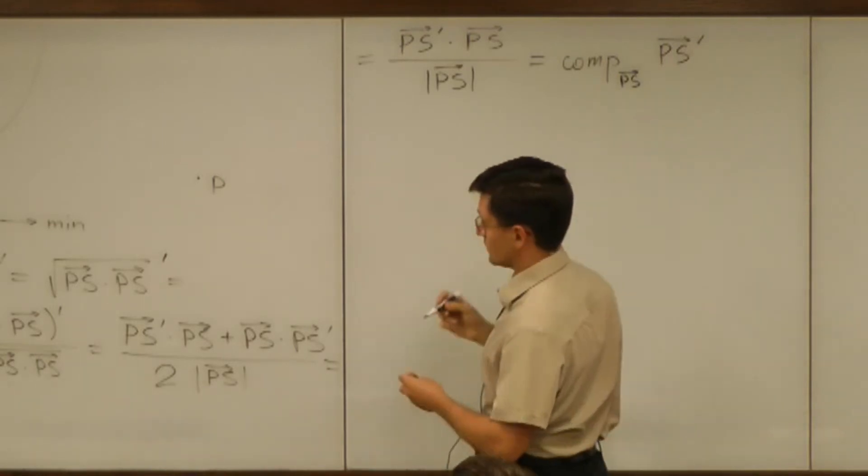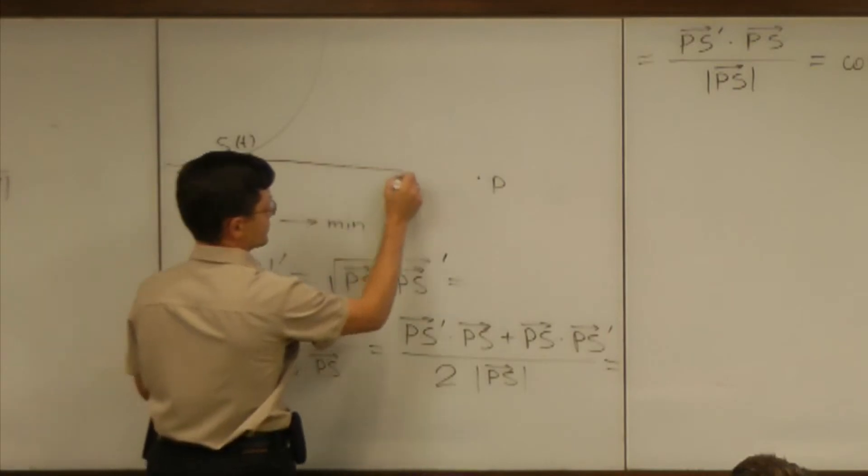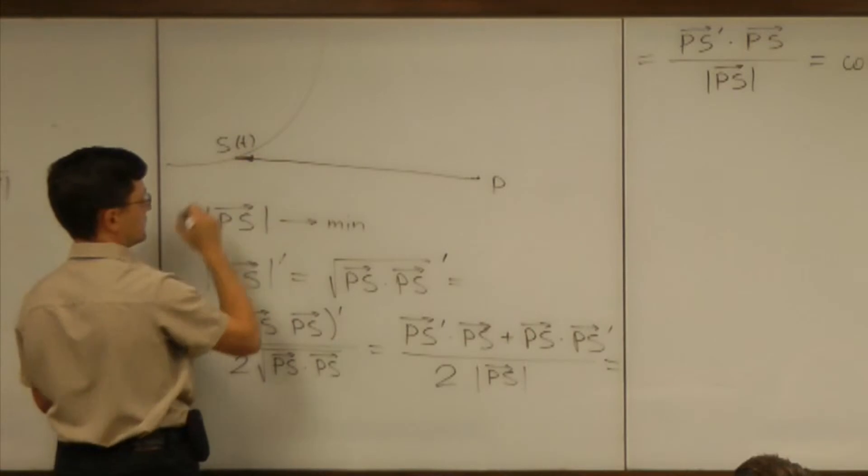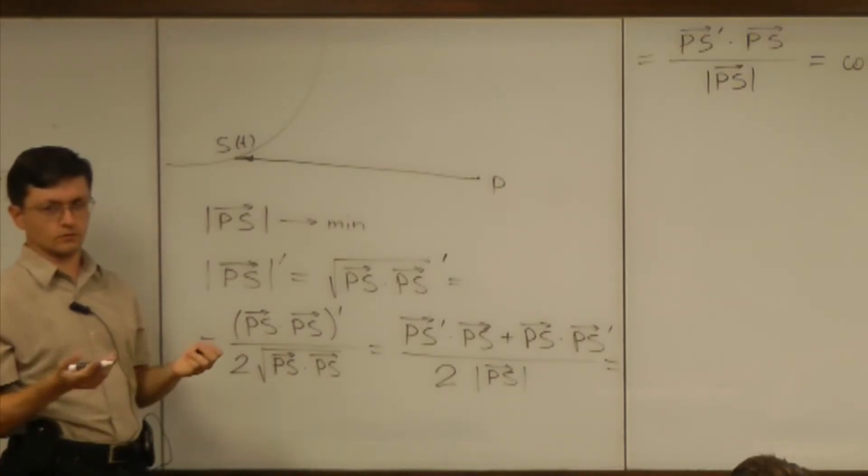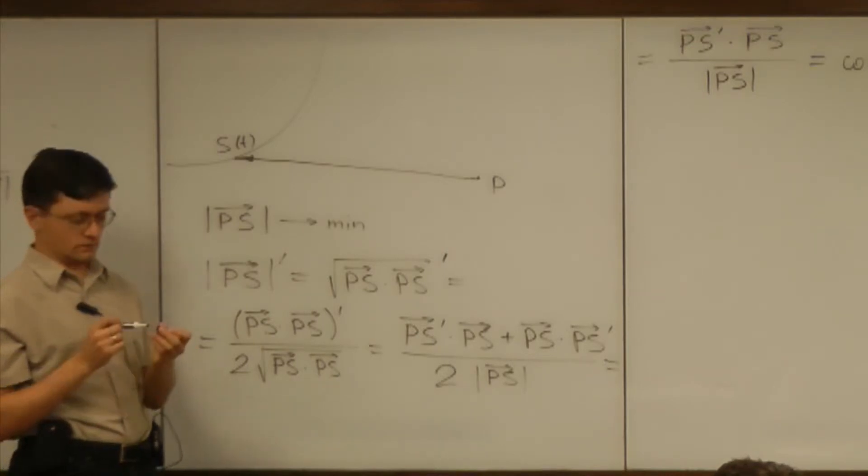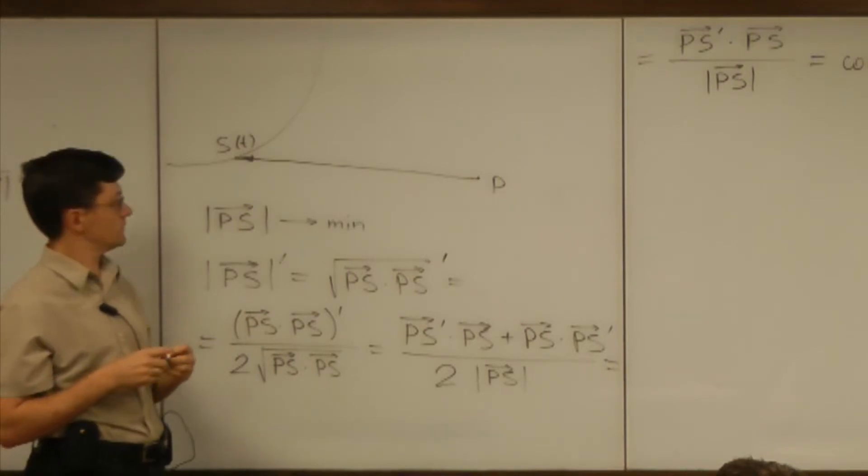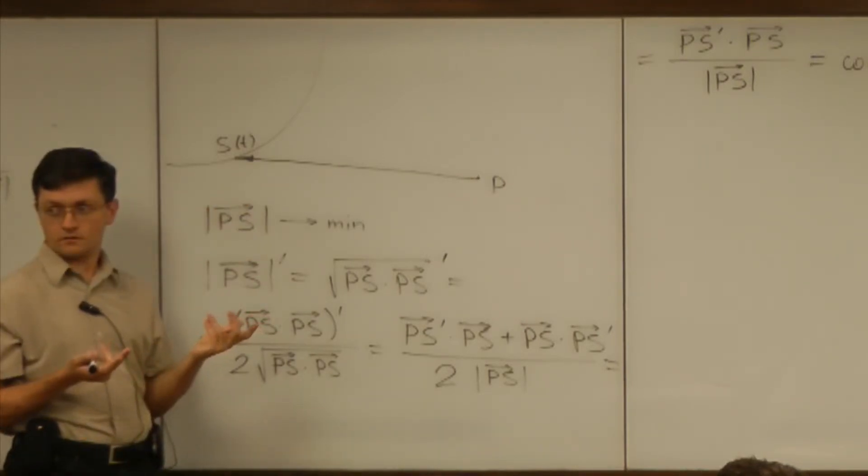And then we can draw it, because then we can see on the picture what the PS vector is. That's the one. Can we imagine what PS' is? How should it look like? What's the meaning of PS', derivative of the vector PS?